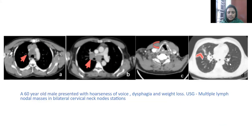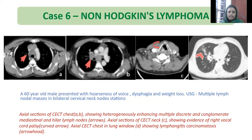Sixth case: a 60-year-old male who presented with hoarseness of voice, dysphagia, and weight loss. Ultrasound showed multiple lymphoid masses in bilateral cervical lymph node stations. Axial sections of CT chest showing heterogeneously enhancing multiple discrete and conglomerate mediastinal and hilar lymph nodes. Axial CT neck images showing evidence of right vocal cord palsy, and in lung window showing lymphangitis carcinomatosa. Biopsy revealed Hodgkin's lymphoma.